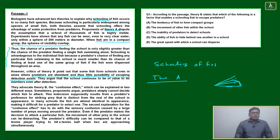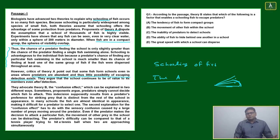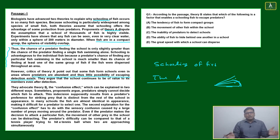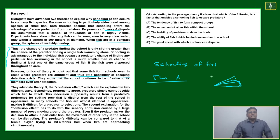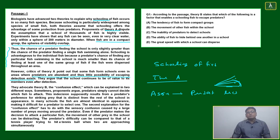They argue that the school continues to be of value to its members even after detection. Where predators are abundant and little possibility of escaping detection exists, if a large number of predators are there, chances come down but still some kind of protection will be there. Our first assumption was predators are very few — we did not consider what happens if a very large number of predators are present.